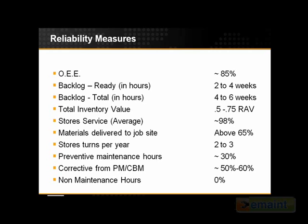We want to target 0.5 to 0.75% of replacement asset value as the total inventory value. For storage service — meaning when someone goes to the store to get a part or a part is reserved to a work order — 98% of the time that part should be available and ready to use. We would hope for 100%, but 98% is probably as good as we've seen in industry. Regarding materials delivered to the job site, if you don't have this function, your craftsmen end up going to get the parts themselves, and they're high-paid folks whose time is better spent on their work.